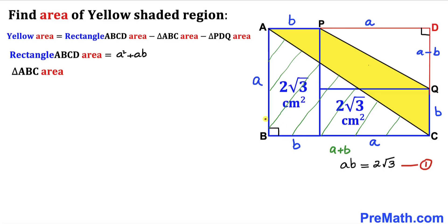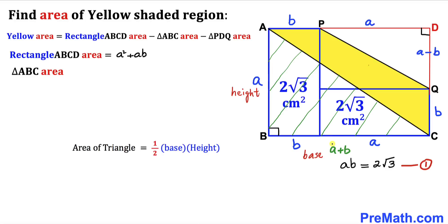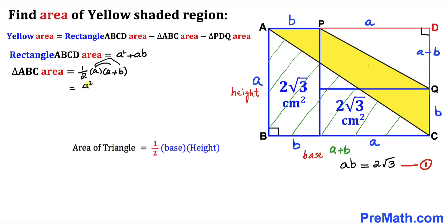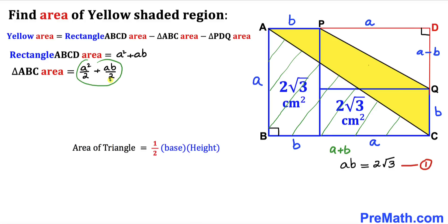Now let's calculate the area of right triangle ABC. The area of a triangle equals one-half times base times height. In our case, the base is A plus B and the height is A. So the area of triangle ABC is one-half times A times (A plus B). Distributing gives us A squared divided by 2 plus AB divided by 2.